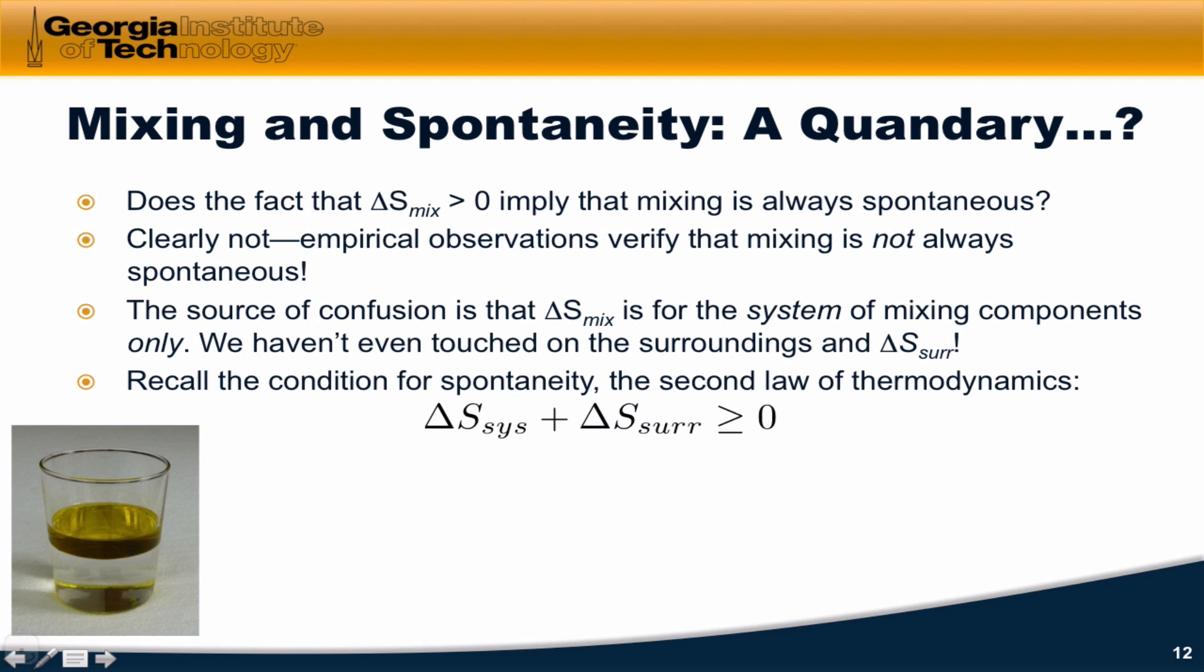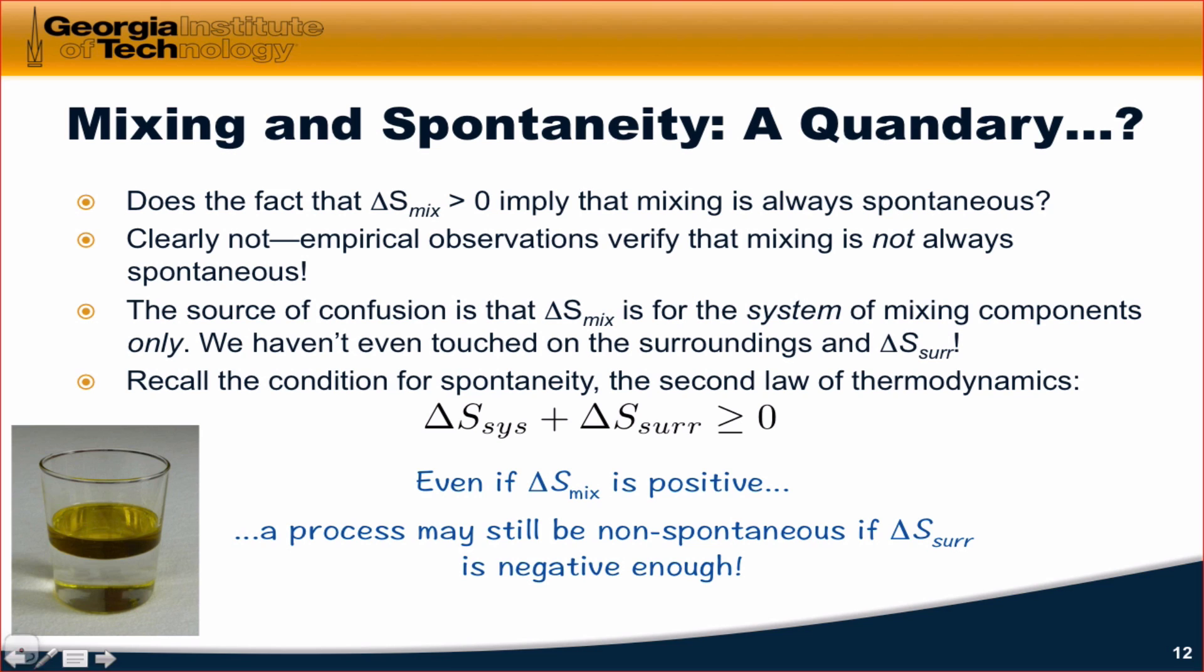Remember that condition for spontaneity, delta S system plus delta S surroundings must be greater than or equal to zero. So even if the delta S of mixing is positive, a process may still be non-spontaneous in a non-isolated system like this if delta S of the surroundings is negative enough. This points to the idea that we really need to think about delta S of the surroundings in more detail, especially since, for all intents and purposes, perfectly isolated systems are impossible to achieve in practice.